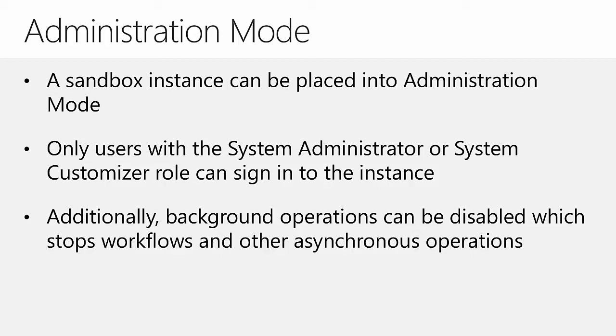For example, if you need to introduce a new ISV solution into the production instance and it will take a few hours of configuration after import, you can switch a production instance to sandbox, place it in administration mode, do the configuration work without users accessing it, and then turn administration mode off and switch the instance back to production once the work is done.